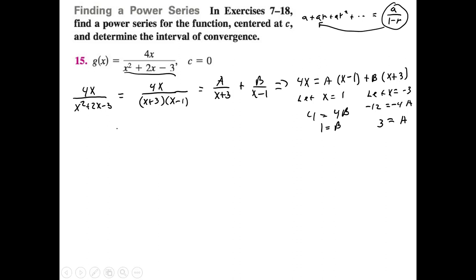We're trying to find a power series centered at c = 0, so we want r to be in terms of just x. If c = 1 we'd want a factor of (x-1); if c = 5, a factor of (x-5). But since c = 0, we just want a factor of x. We have 3 over (x+3), which we rewrite as 3 over (3+x).